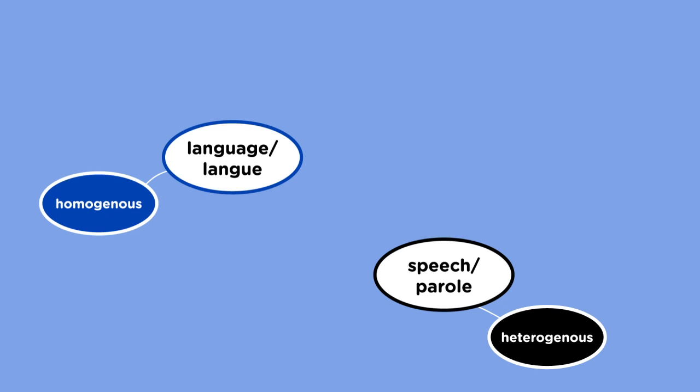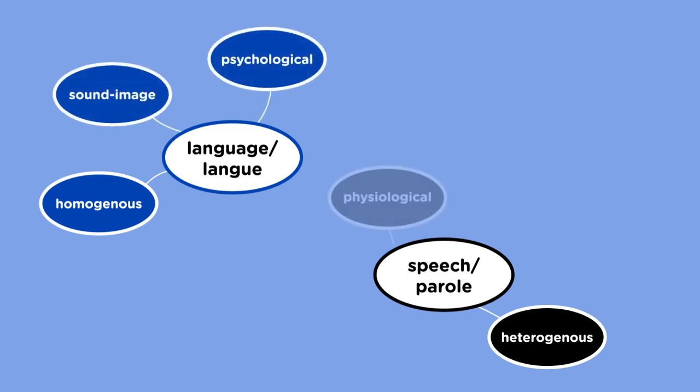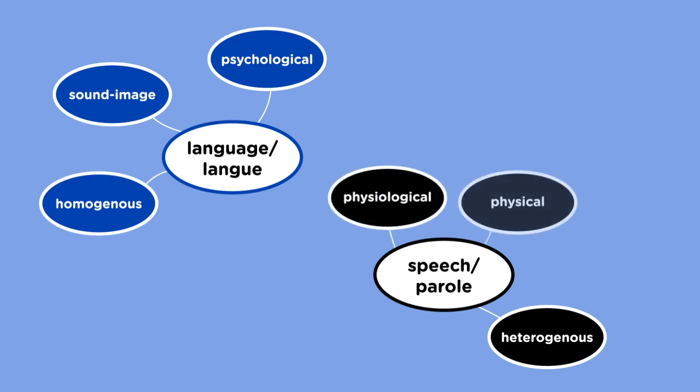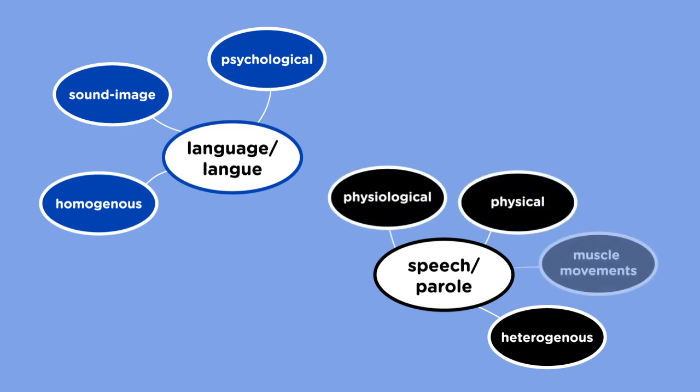Language sits in the brain of the mass or the people and is in the form of sound image and is therefore psychological. But speech is physiological and physical and the product of muscle movements. Language can be represented in written forms as written words in, for example, dictionaries and grammar books.